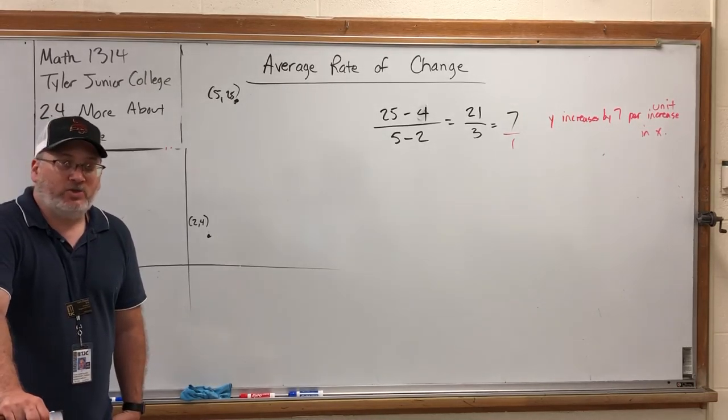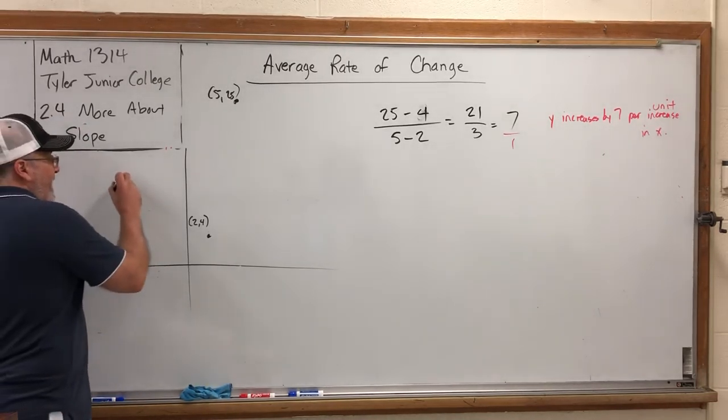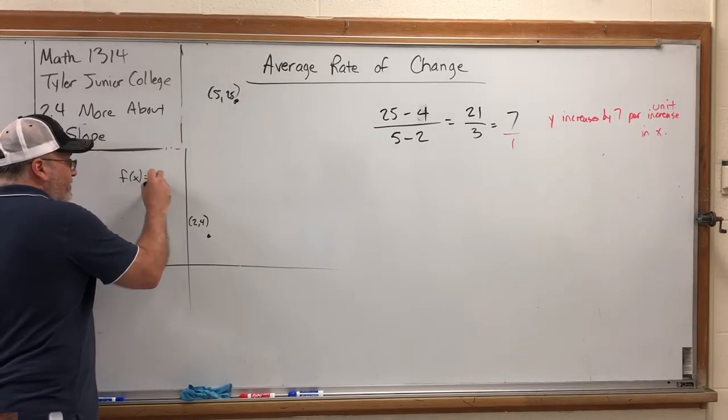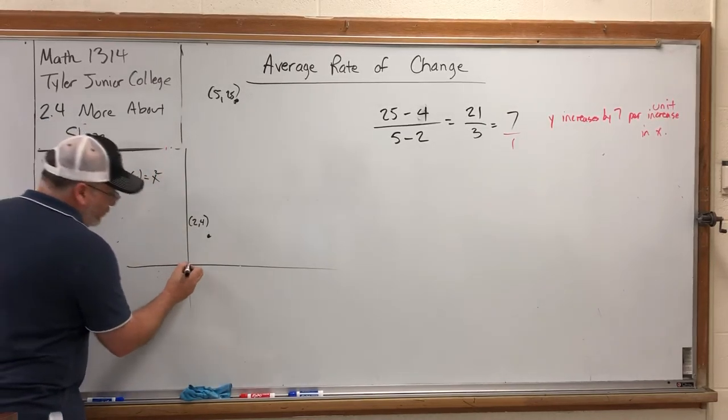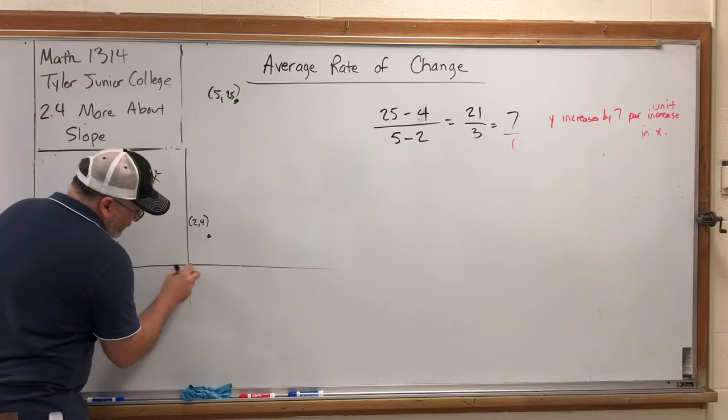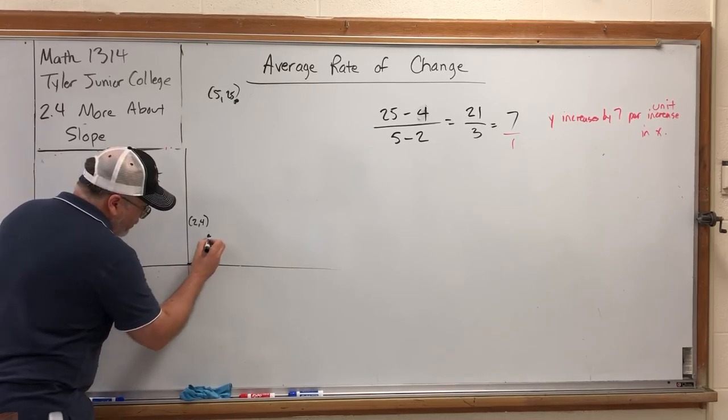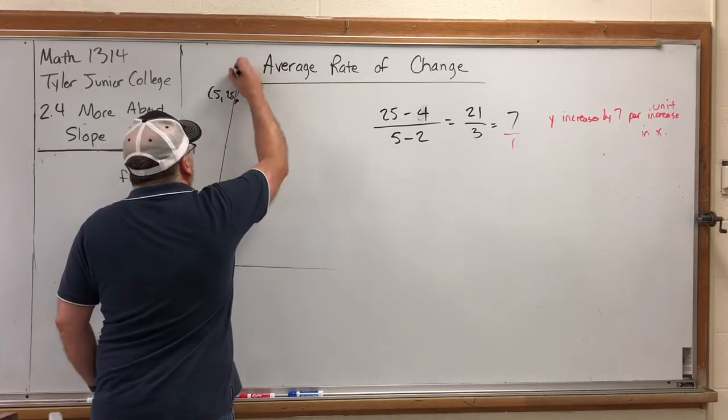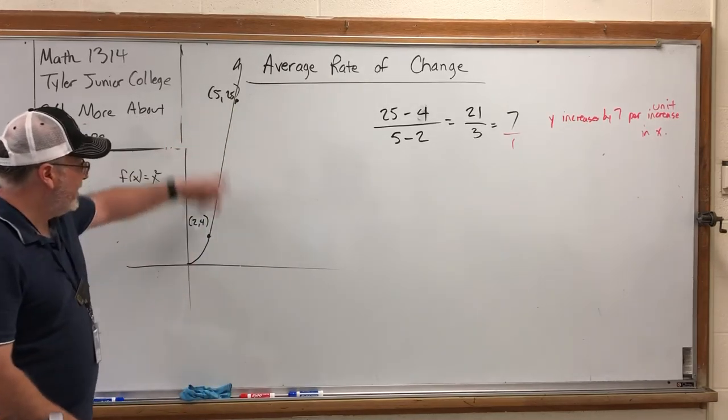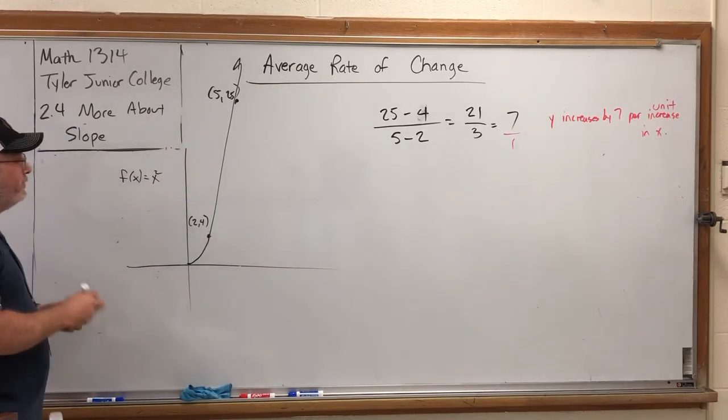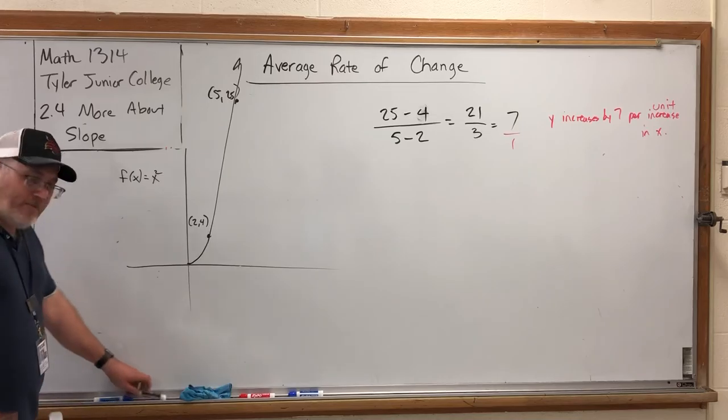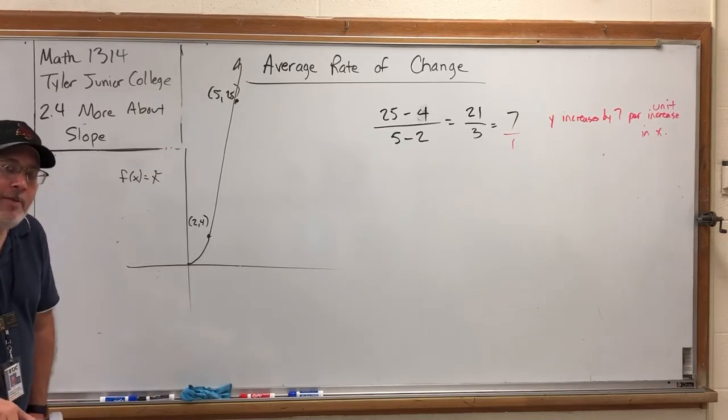What can you do to 2 that turns it into 4, and do the same thing to 5 that turns it into 25? Answer, square it. The function I had in mind was actually f(x) = x², which would be a parabola whose vertex is at the origin. Now, that looks like a line, but I promise you it's not.